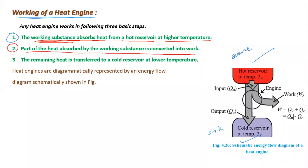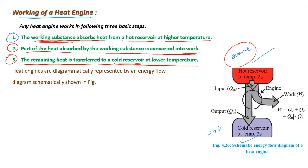Part of the heat is used to do the work, and the third step: the remaining heat is transferred to the cold reservoir — it is not lost to the surroundings but transferred to the cold reservoir (sink). Heat is absorbed from the source, some is used to do work, and the rest is absorbed by the cold reservoir.